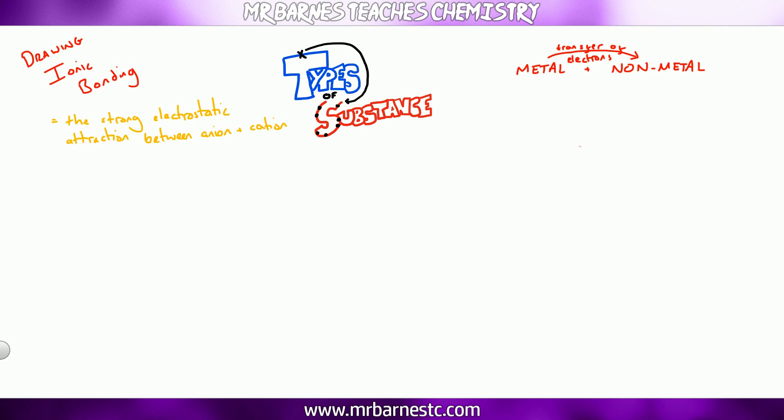The next thing you need to be able to do in ionic bonding is to be able to draw it, and to be able to draw dot and cross diagrams. We're going to have a look at the reaction between aluminium and chlorine. Aluminium is a metal so it loses electrons. Chlorine is a non-metal so it gains electrons. Therefore we know it's ionic.